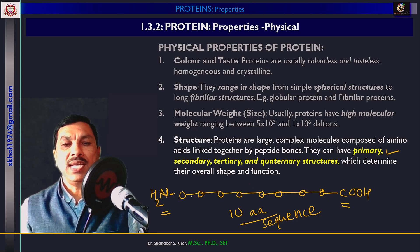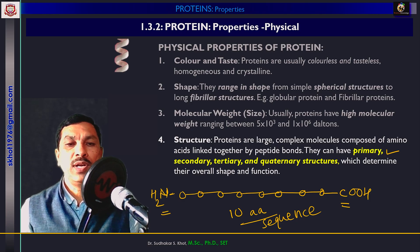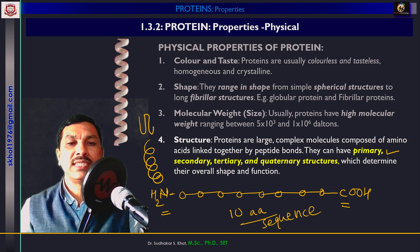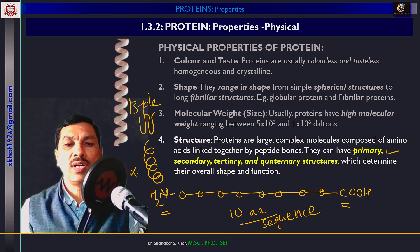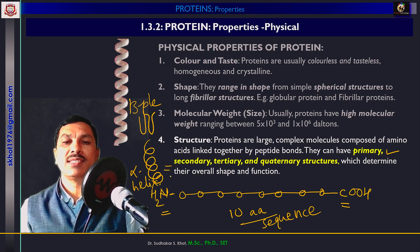Sometimes this primary structure folds upon itself by forming hydrogen bonds. This folding may produce a spiral structure called an alpha helix, or it may fold to form parallel sheets called beta-pleated sheets. These two structures — alpha helix and beta-pleated sheets — are the secondary structures of protein.